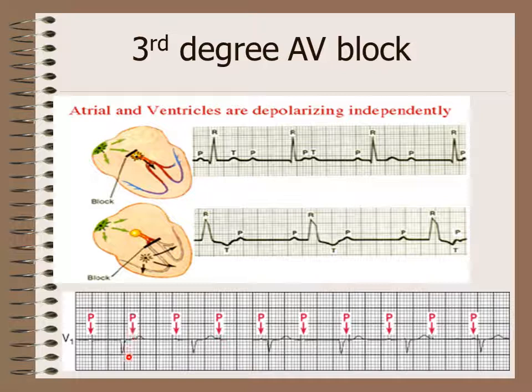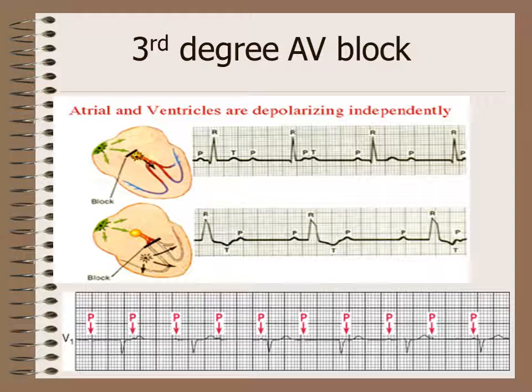As we can see here, the ventricular rate is not bradycardic — it is above 60 beats per minute. The atrial rate is at a different rate and is regular, and there is no relation between the P waves and the QRS complexes. This is a third degree AV block.